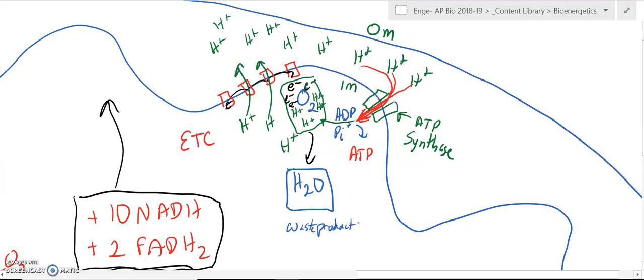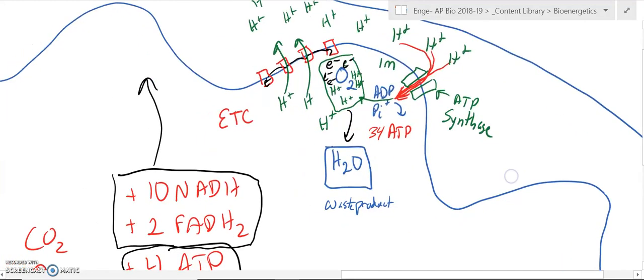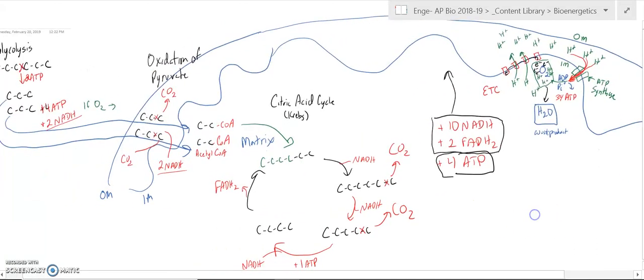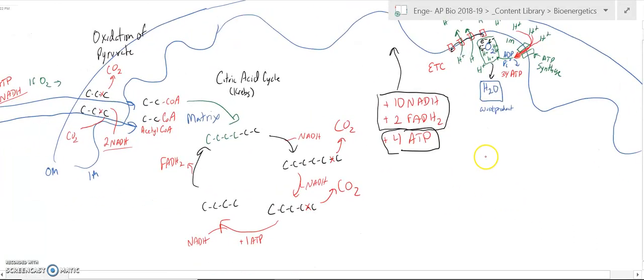Now, we can use the water. For this process, it's a waste product. And so, what we can do is end up with, for every one sugar, we end up with roughly 34 more ATP. Now, this entire process, from start to finish, can give us anywhere between 38 to 48 ATP, depending on its efficiency.